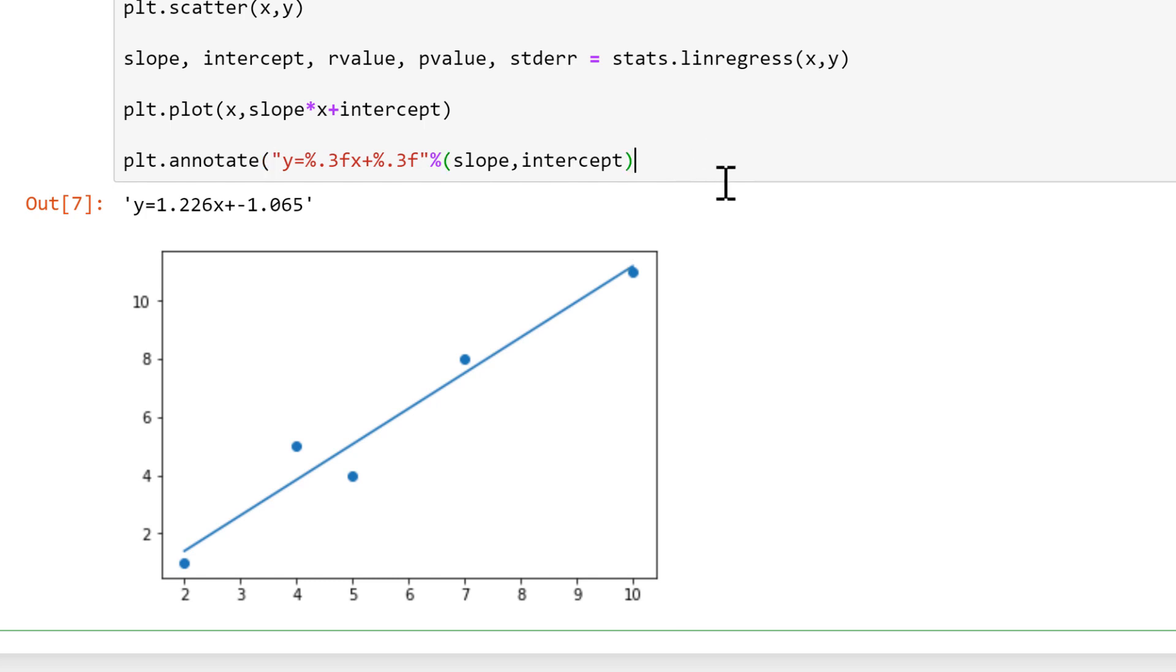And we need to tell it where we want the annotation to be, so we need xy coordinates, and they're going to be the figure fraction. So figure fraction means that the left-hand side is equal to zero and the right-hand side is equal to one, and the bottom is equal to zero and the top is equal to one.